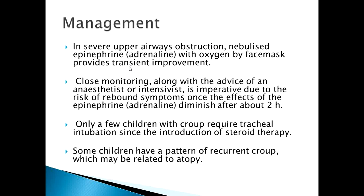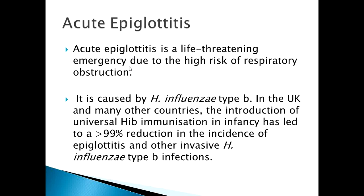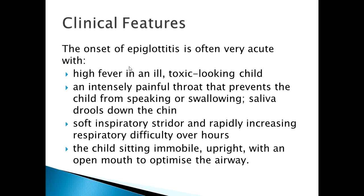Next is acute epiglottitis. This is a severe, life-threatening emergency due to the high risk of respiratory obstruction, caused by Haemophilus influenzae type B. In the UK and many other countries including Pakistan, the introduction of universal Hib immunization in infancy has led to more than 99% reduction in the incidence of epiglottitis and other invasive Haemophilus influenzae type B infections. There is intense swelling of the epiglottis and surrounding tissues associated with septicemia. Epiglottitis is most common in children aged one to six years but affects all age groups.